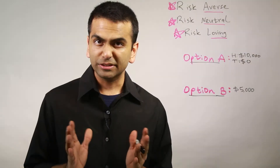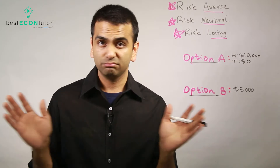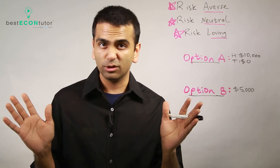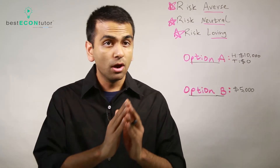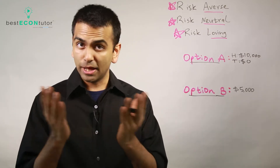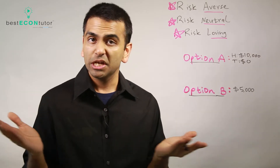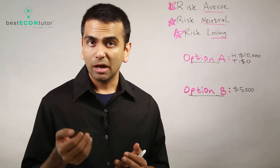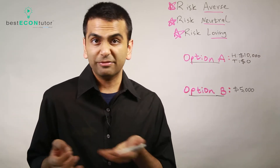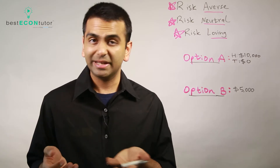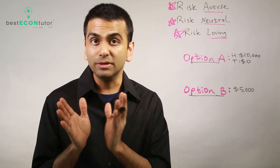Let's first talk about risk. Imagine that somebody wants to help you out financially and they give you two options. They say, hey, I could just give you $5,000 — no questions asked, no strings attached. That's one option.